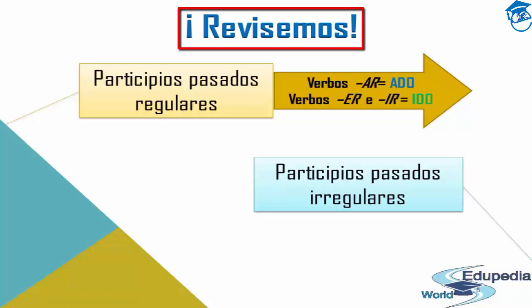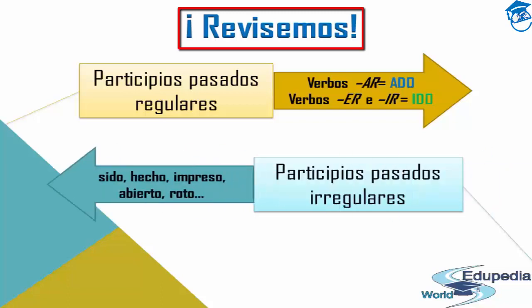In the case of irregular past participles — los participios pasados irregulares — they don't follow a particular rule. Let's remember some from the previous video: 'sido' for 'to be,' 'hecho' for 'to do' (done), 'impreso' for 'imprimir,' 'abierto' for 'abrir' (to open), and 'roto' for 'romper' (to break).